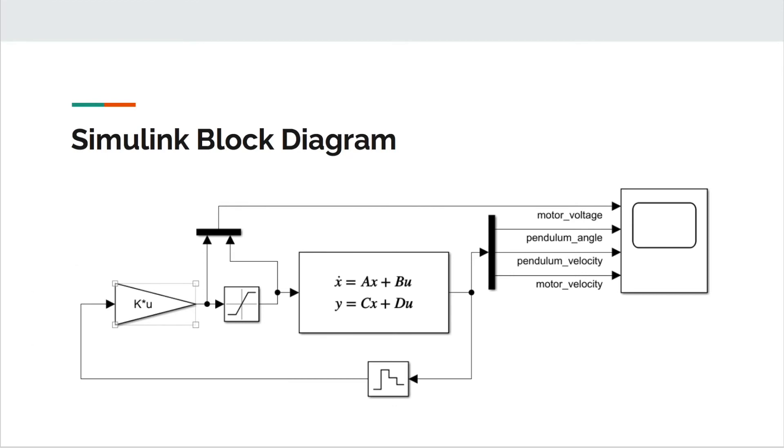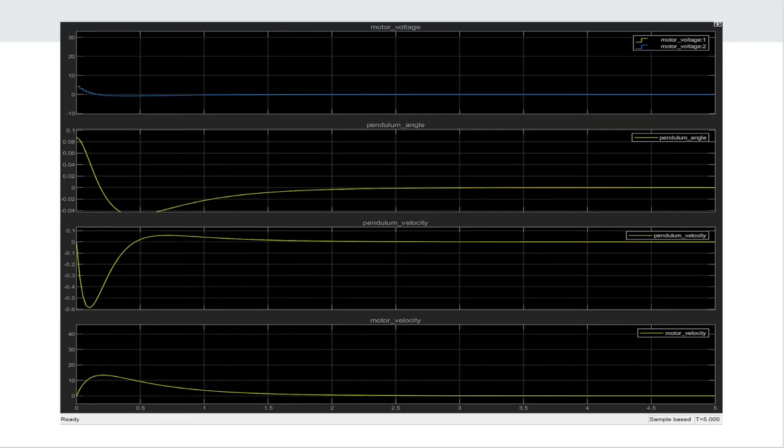Here's our Simulink block diagram. And here is the output of our Simulink block diagram. If you look at the pendulum angle graph, you can see that our percent overshoot, steady state error, and settling time are all within an acceptable range. Please note that this graph is over a timescale of 5 seconds.